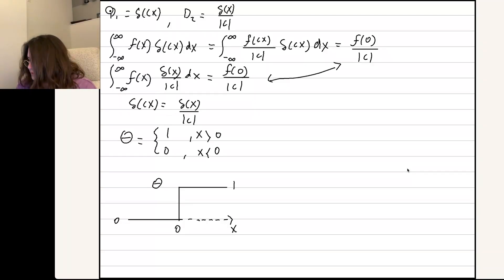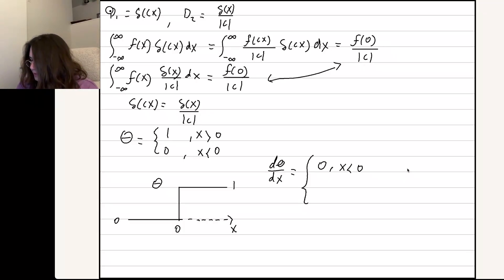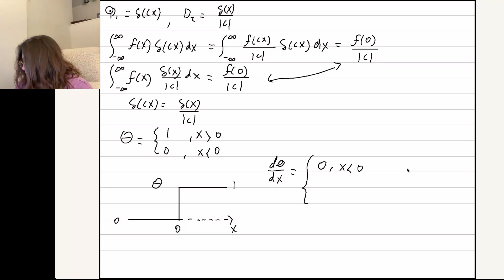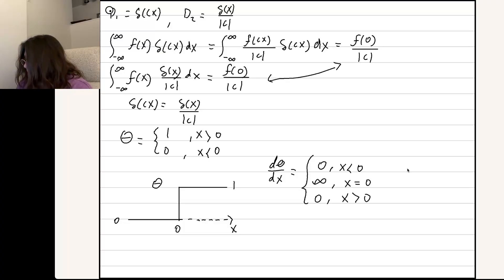We're going to split it into three regions. For x less than 0, it's a flat line, so the slope is 0 — the derivative is 0. For x equal to 0, we have a perfectly vertical line, so the slope is infinity — it has to be infinity at x equals 0. And for x greater than 0, the derivative is also 0 because that's also just a flat line with zero slope.